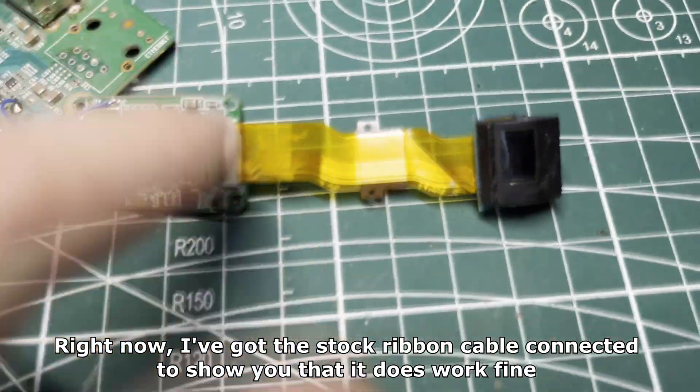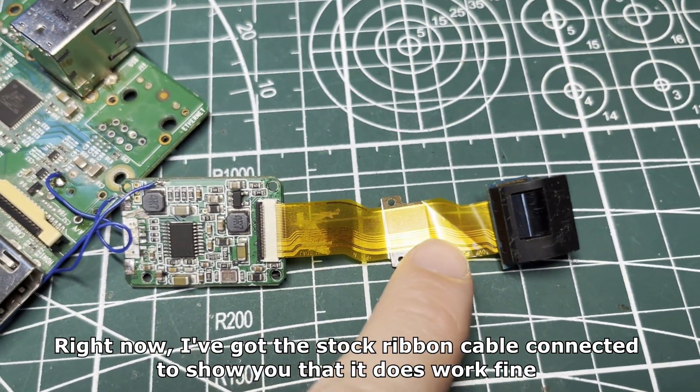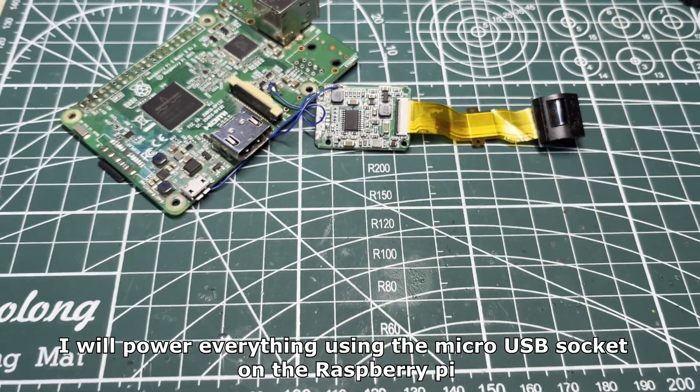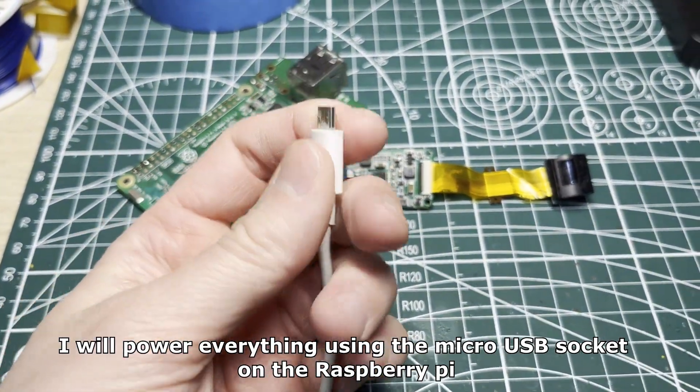Right now I've got the stock ribbon cable connected to show you that it does work fine. I will power everything using the micro USB socket on the Raspberry Pi.